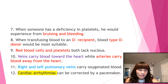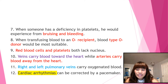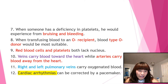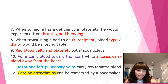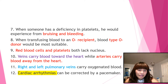Number ten: veins carry blood toward the heart, while arteries carry blood away from the heart. A helpful tip — 'V' and 'T' are close in alphabetical order (veins, toward), and arteries and away both start with the letter A. Number eleven: right and left pulmonary veins carry oxygenated blood.